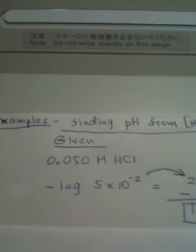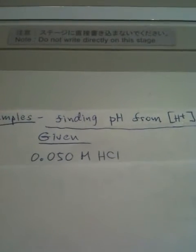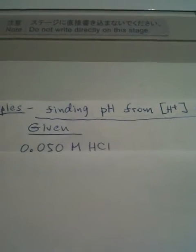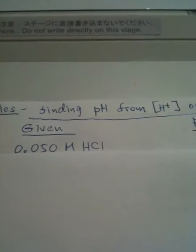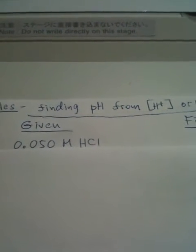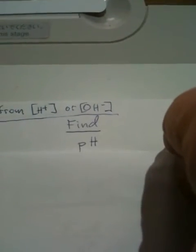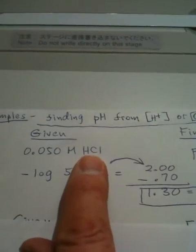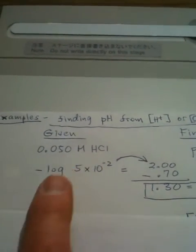Let's cover this up so you can concentrate a little better on what's given. It's 0.050 molar hydrochloric acid. We're supposed to find the pH. We are going to take the hydrogen ion concentration as equal to the hydrochloric acid concentration because it's a strong acid.